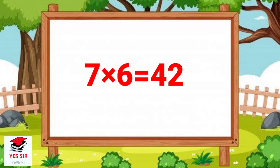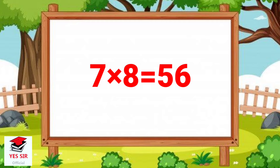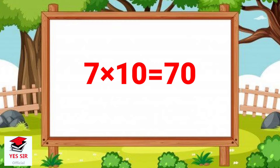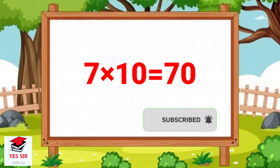7 and 6 is equal to 42. 7 and 7 is equal to 49. 7 and 8 is equal to 56. 7 and 9 is equal to 63. 7 and 10 is equal to 70.